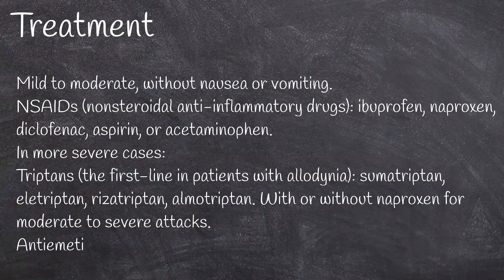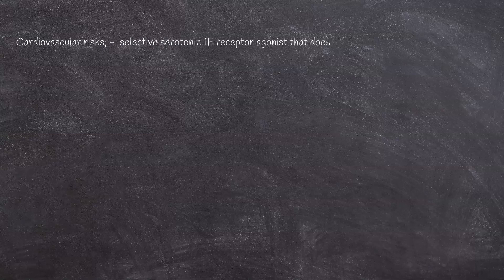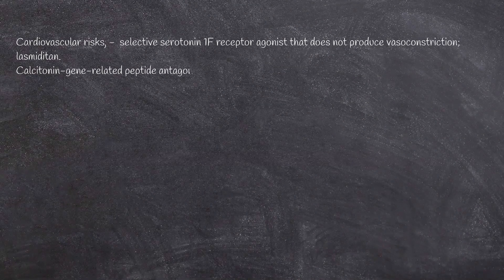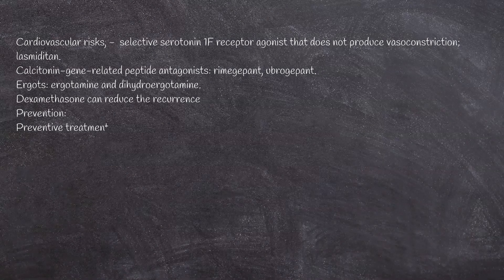Triptans should be limited to less than 10 days of use within a month to avoid medication overuse and due to cardiovascular risks. Antiemetics such as metoclopramide, chlorpromazine, and prochlorperazine are generally used as adjunctive therapy with NSAIDs or triptans to decrease nausea and vomiting. In patients with cardiovascular risks, the best suited medication is a selective serotonin 1F receptor agonist that does not produce vasoconstriction, such as lasmiditan. Calcitonin gene-related peptide antagonists, rimegepant and ubrogepant, can be considered in patients who don't respond to conventional treatment or in those with coronary artery disease. Ergotamine and dihydroergotamine are also options, with dihydroergotamine being the only one recommended for acute attacks via parenteral administration, though it can have significant side effects.